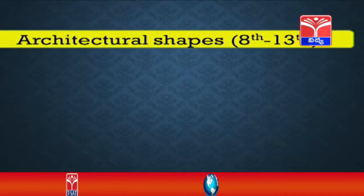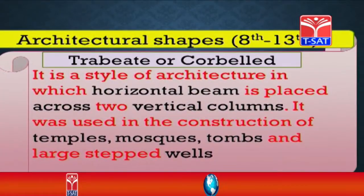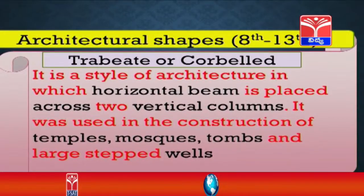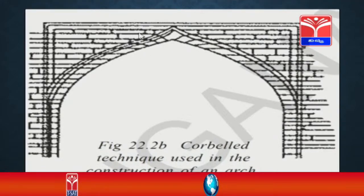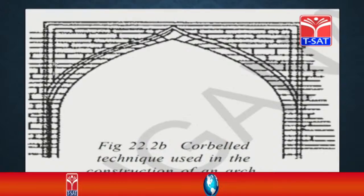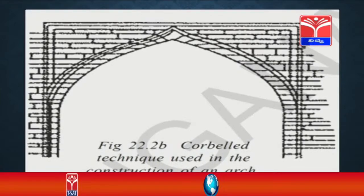Let us understand architectural shapes used between the 8th and 13th centuries. One important structural shape is trabeate — also called corbelled — a style of architecture in which a horizontal beam is placed across two vertical columns. It was used in the construction of temples, mosques, tombs and large stepped wells. On the screen you can see the superstructure: columns or pillars, with a horizontal beam placed on top, out of which an arch is constructed. This is the corbelled technique used in arch construction.